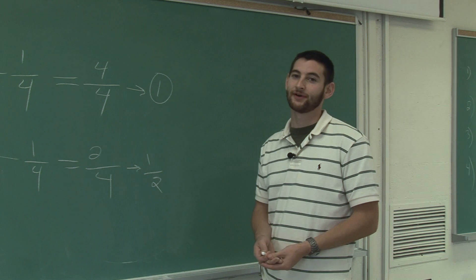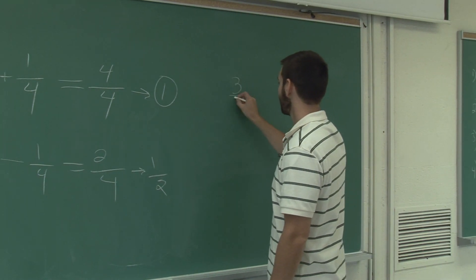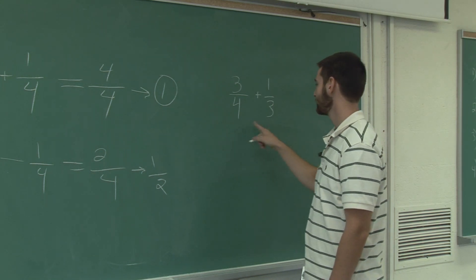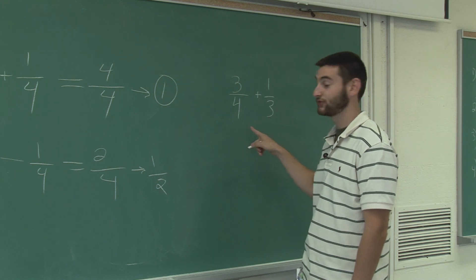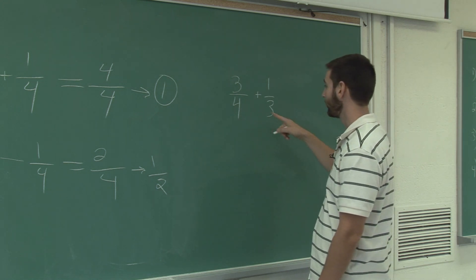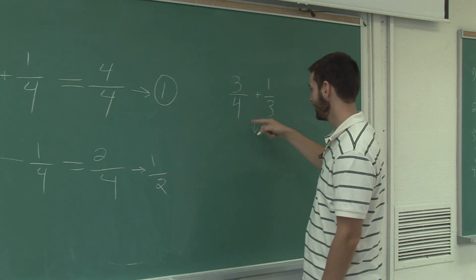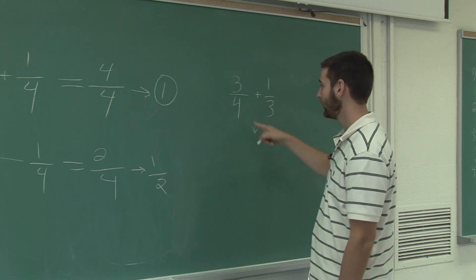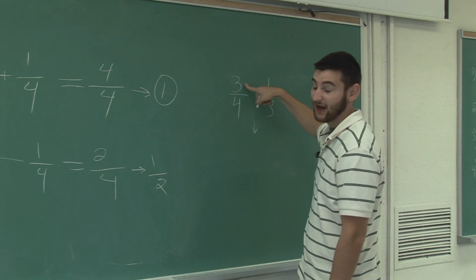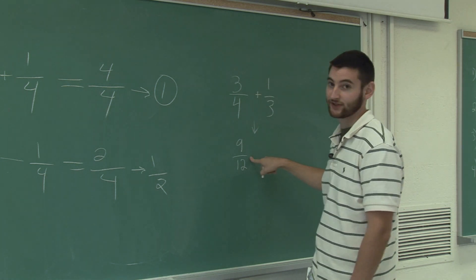When you're adding fractions with different denominators there's another step you need to do. If I add 3 quarters and 1 third, I need to first make them have a common denominator. The easiest way is to multiply the two denominators together to get 12. To get 12 from 4 I multiply by 3, so I multiply the top by 3 as well. 3 quarters is equivalent to 9 twelfths.